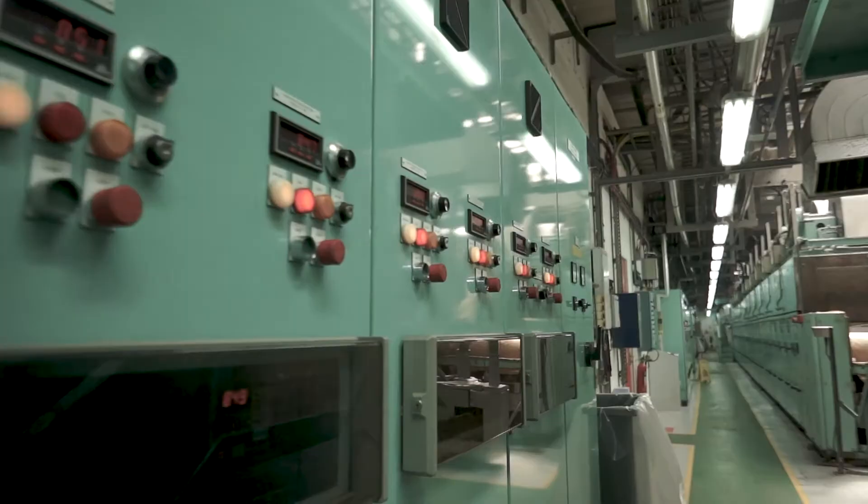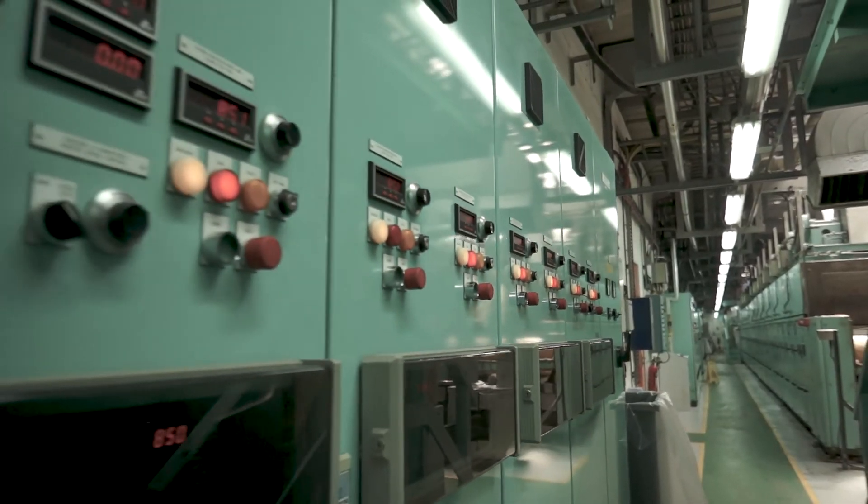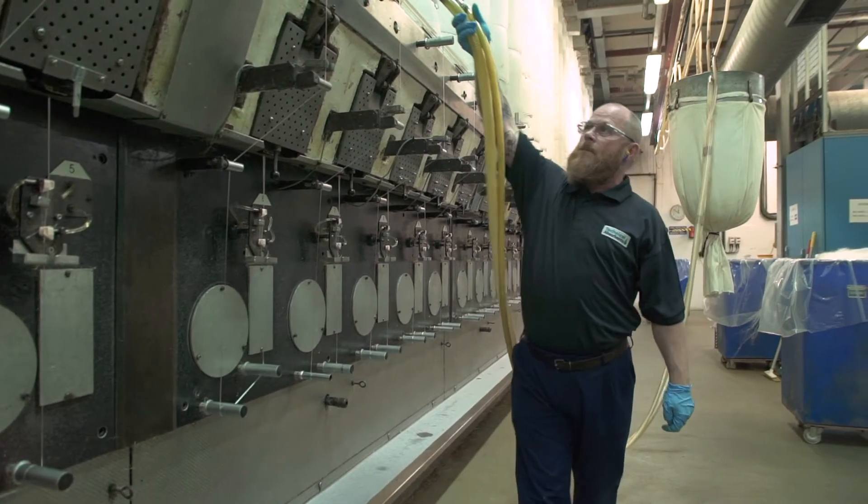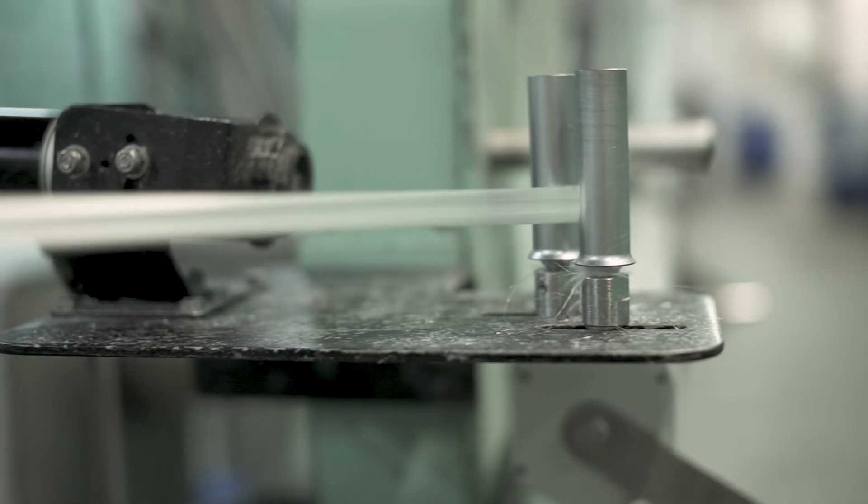The staple fibre is manufactured using a unique process. This involves spinning, drying and cutting before the fibres are cross-linked to become superabsorbent.